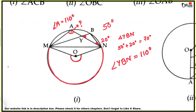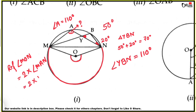By theorem number 1, the angle subtended at the center is always double the angle subtended at the remaining part of the circle. So reflex angle MON equals 2 times angle MAN, which equals 2 times 110 degrees, giving 220 degrees.